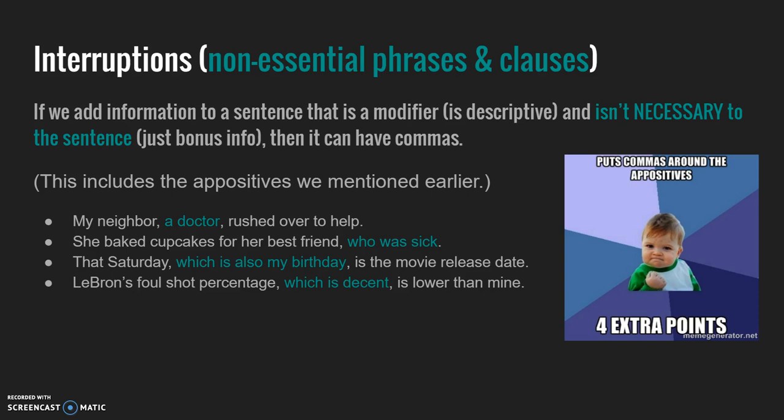Different kinds of interruptions in the middle or at the end of sentences also get commas — not just appositives, but modifiers that are non-restrictive. For example: 'my neighbor, who's a doctor,' or 'my best friend, who was sick this Saturday, which is also my birthday,' or 'his foul shot percentage, which is decent.' These add-ons and interruptions that provide bonus information not critical to the sentence get commas.